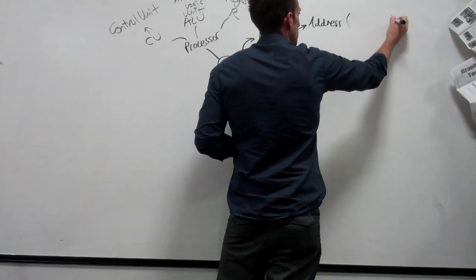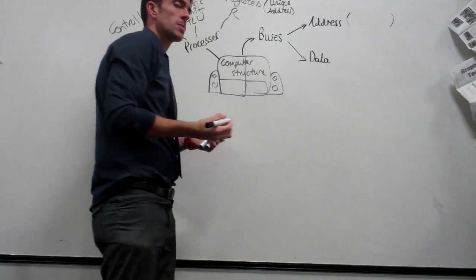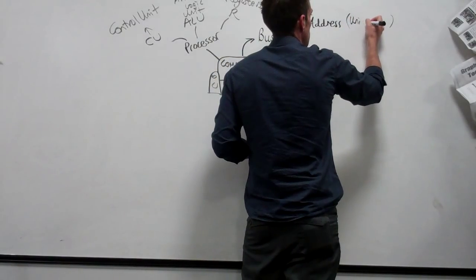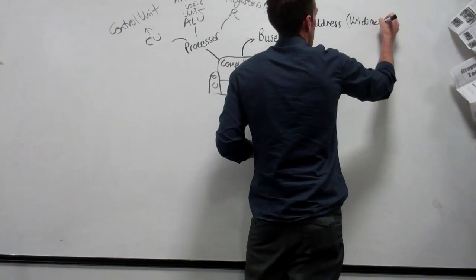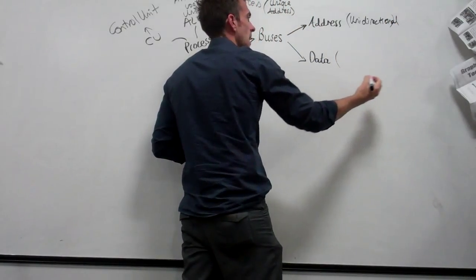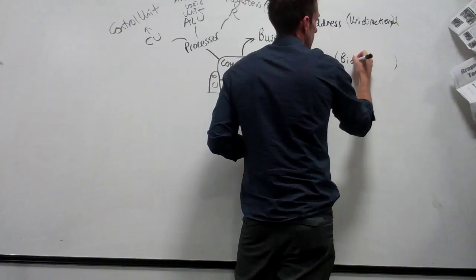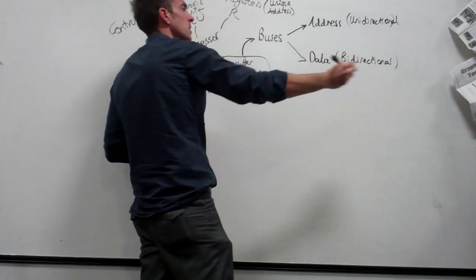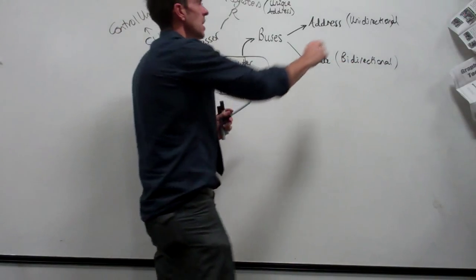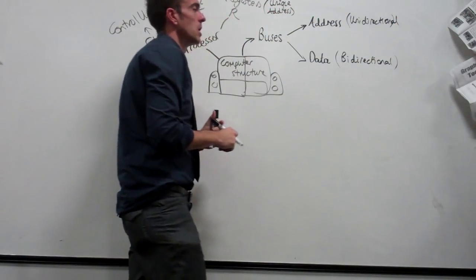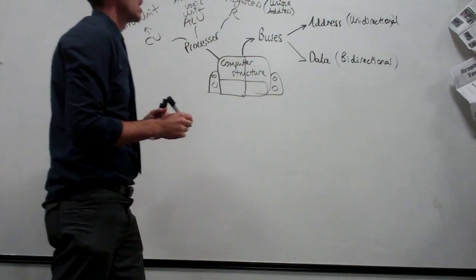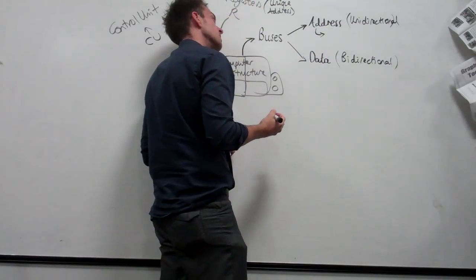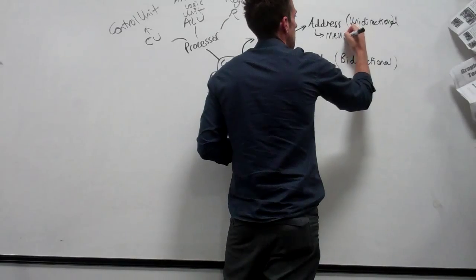What's the special word to describe the address bus? Unidirectional. So it's unidirectional. And the data bus? Bi-directional. So we can carry data to and from the processor and peripheral devices. The address bus just points at memory locations in one direction. What does the size of the address bus tell you? The number of memory locations.